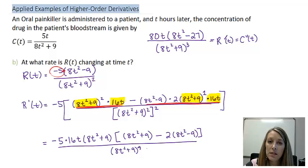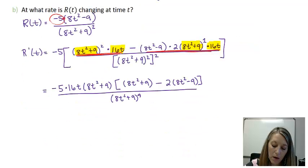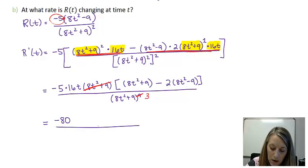And you can already see that this is going to be a lot easier. So I need to multiply this 5 times negative 16, which gives me negative 80. This 8t squared plus 9 cancels with them in the denominator, so that tells me that I'm going to have three of them left over in the denominator.